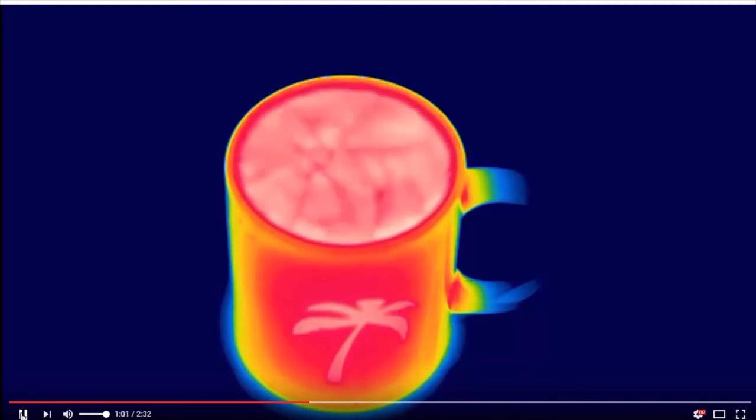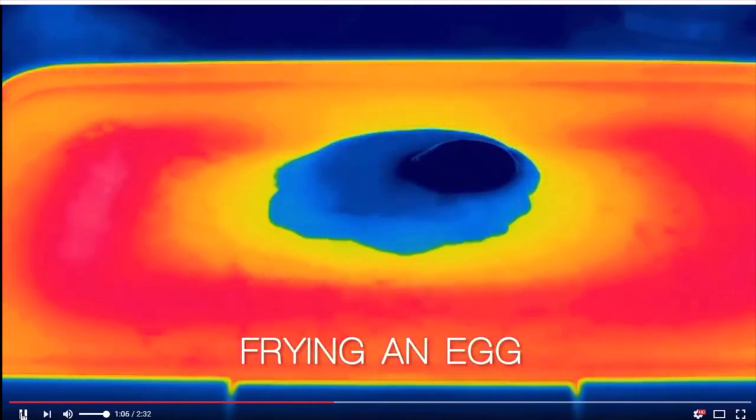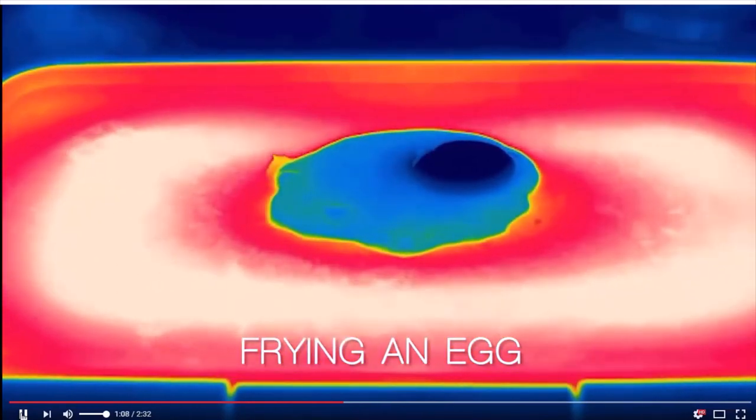You see the cup getting hotter and hotter as heat is conducted along the handle of the cup. Here we're frying an egg. The egg starts off cold, but heat is conducted into it from the fry pan.